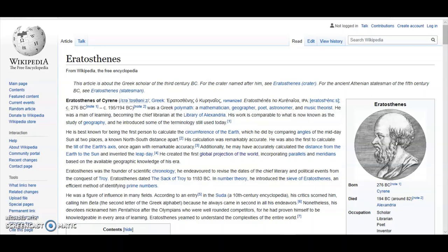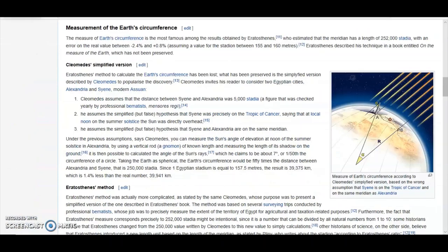All he did was create a perfect sphere and divided it equally. He knew that a circle must equal 360 degrees. Just listen to this entry in Wikipedia. Eratosthenes' method to calculate the earth's circumference has been lost. What has been preserved is the simplified version described by Cleomedes to popularize the discovery.